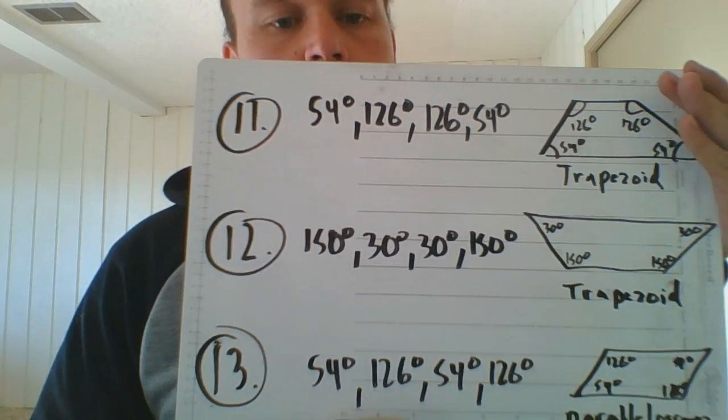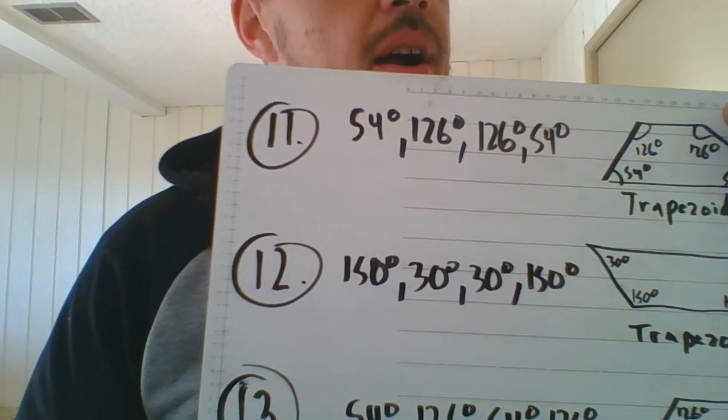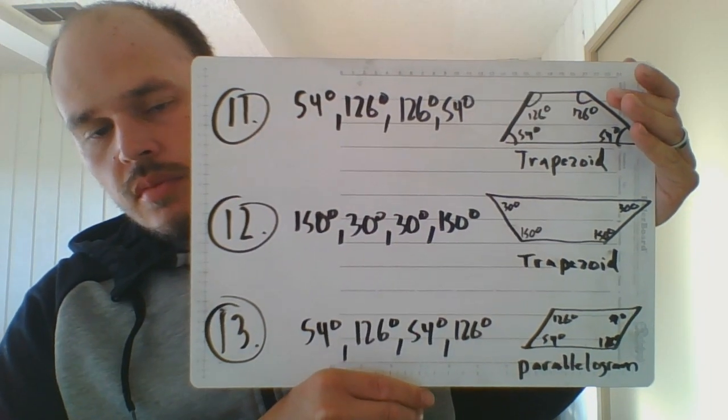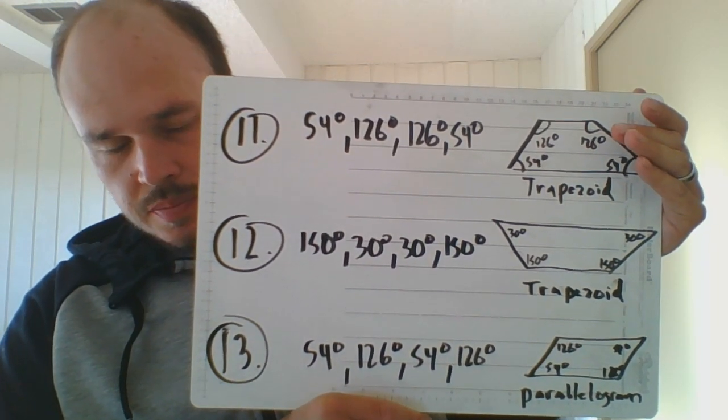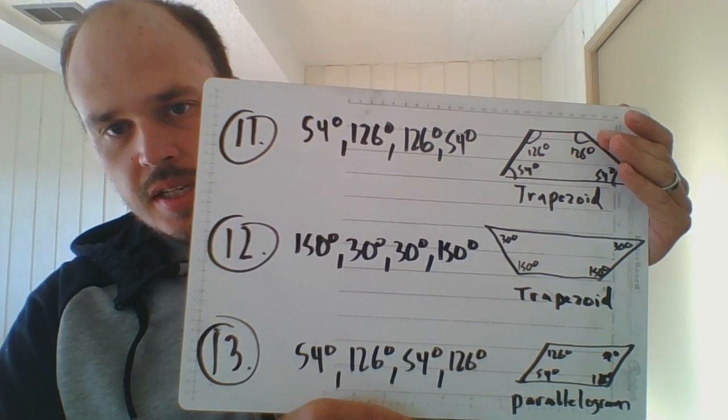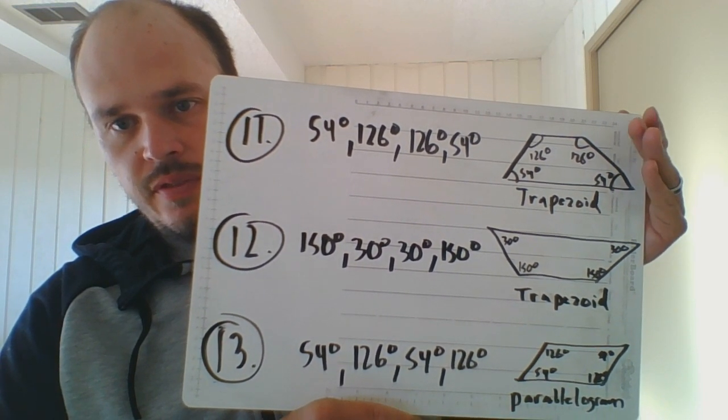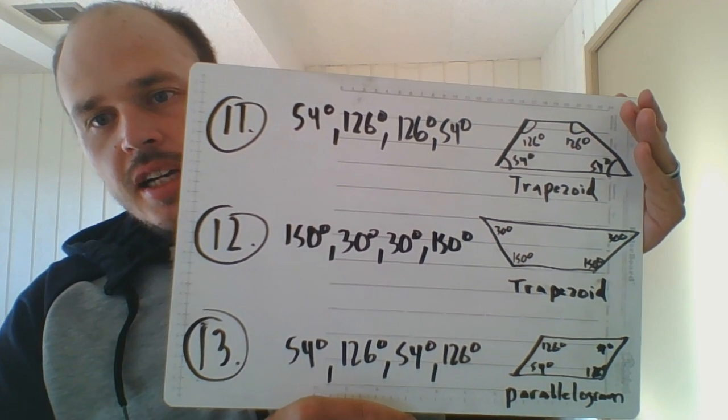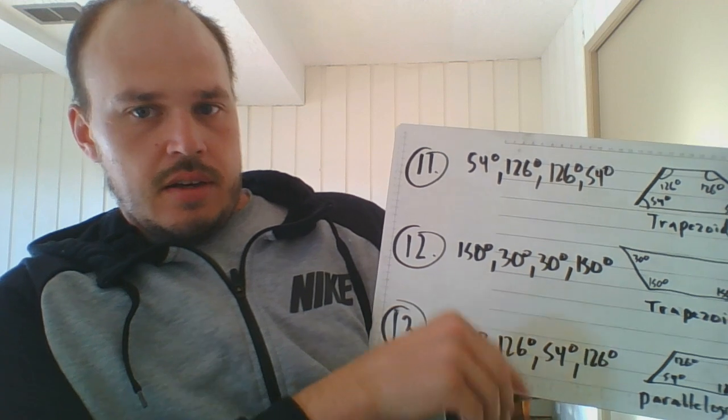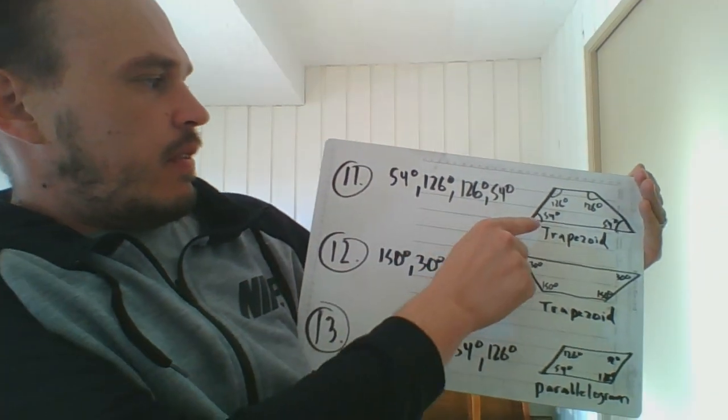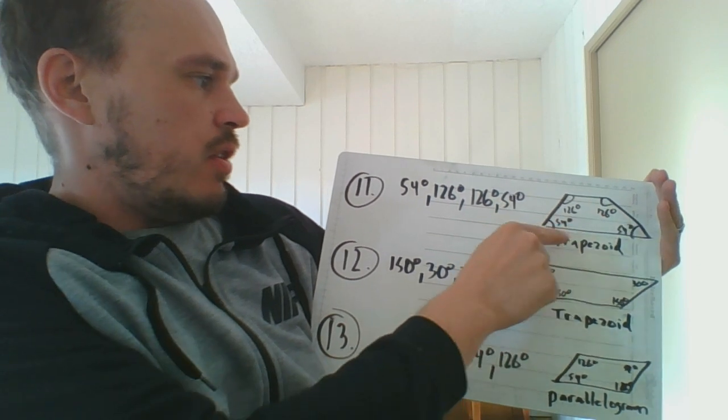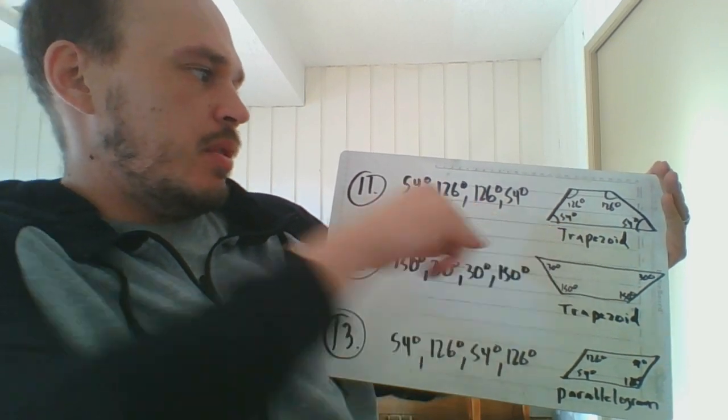Okay. I'm jumping up to 11, 12, and 13 in independent practice. They're going to list these measurements to you like this. These are always confusing in class. So I listed the measurements for number 11. 54 degrees, 126 degrees, 126 degrees, and 54 degrees. I'm going to show you how that would be drawn out. You just draw them in order. So you would have 54 degrees, 126 degrees, 126 degrees, and 54 degrees. Usually that's going to be a trapezoid.